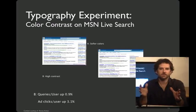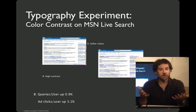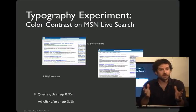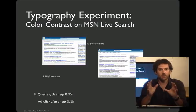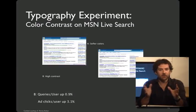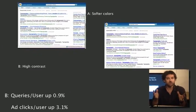Ron Kohavi has been a leading expert on controlled experimentation for a number of years, and I'd like to share with you a couple of examples from his research. He's currently at Microsoft, and here's a simple example from search results that shows how imperceptible changes to an individual can aggregate to yield phenomena that you can measure. Here you can see two versions of search results, one which is slightly typographically crisper than the other one.